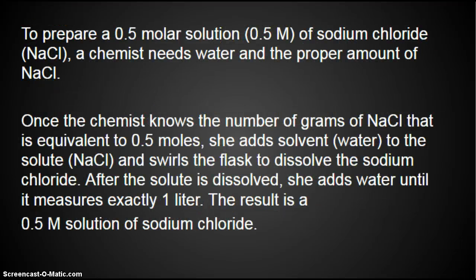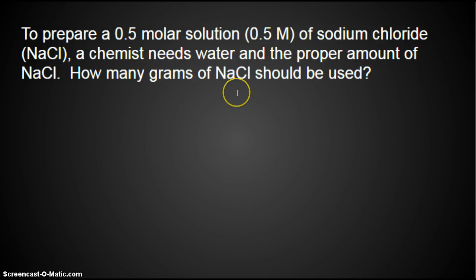To prepare a 0.5 molar solution of sodium chloride, a chemist needs water and the proper amount of table salt. Once the chemist knows the number of grams of NaCl that is equivalent to 0.5 moles, she adds the solvent, which is water, to the solute, the table salt, and swirls the flask to dissolve the sodium chloride. After the solute is dissolved, she adds water until it measures exactly 1 liter.